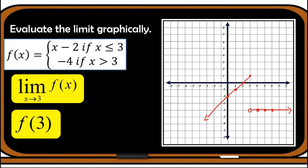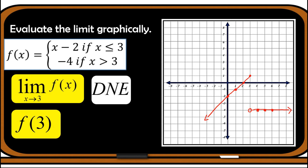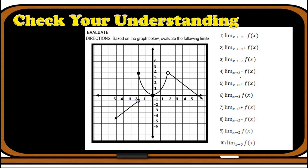Let us find the limit of the function as x approaches 3. We need to look at both sides. Approaching 3 from the left, the graph goes to 1. Approaching 3 from the right, the graph approaches -4. Since the values are different, the limit as x approaches 3 does not exist. For the second question, evaluating the function when x = 3: the point is at a shaded circle, therefore f(3) is equal to 1.